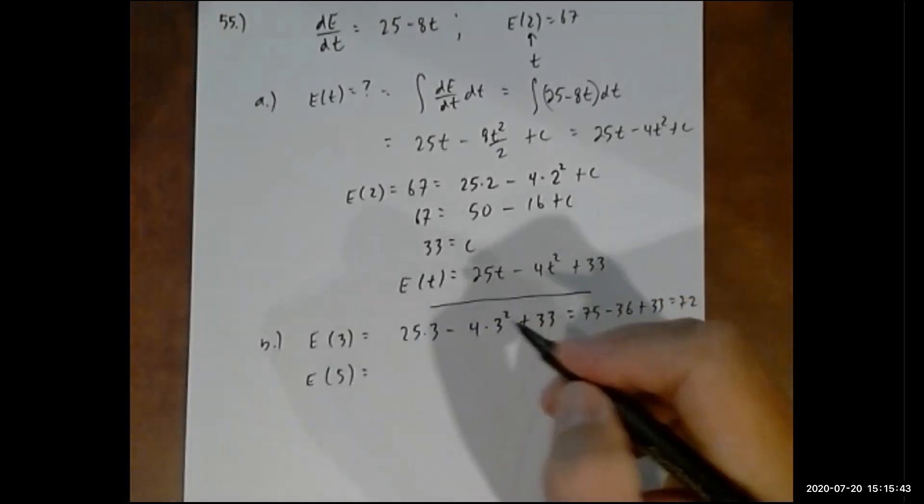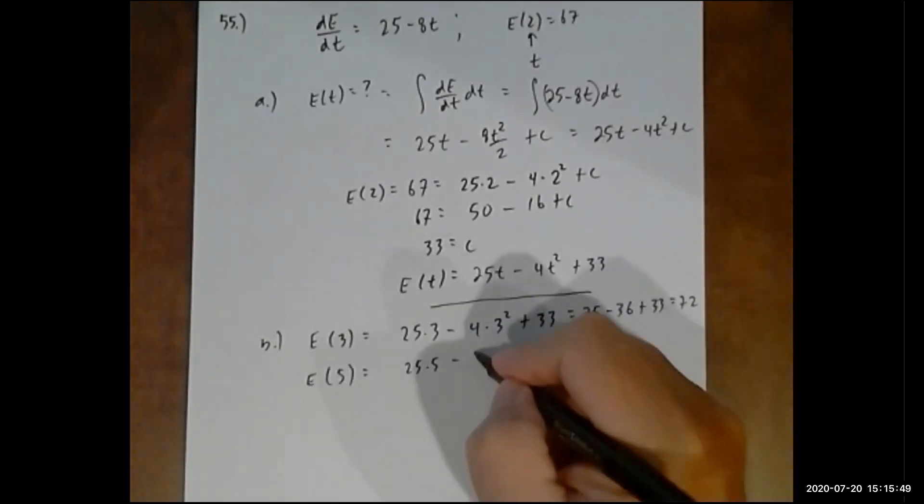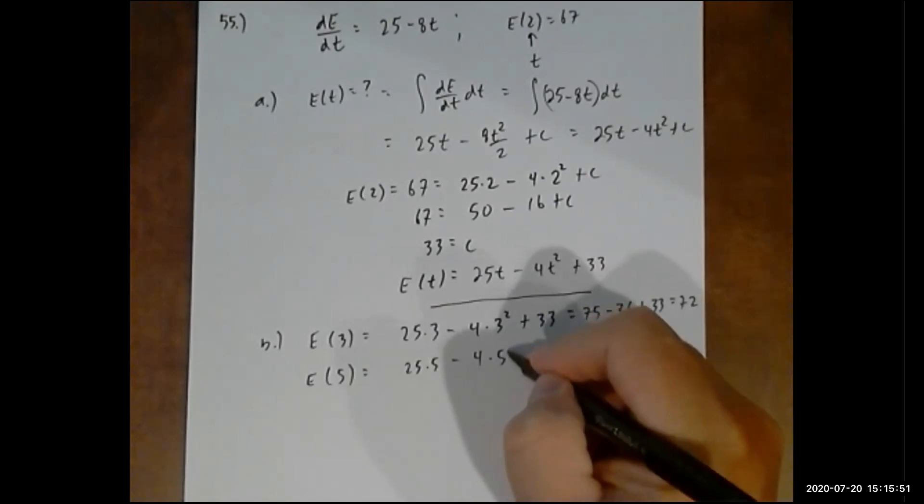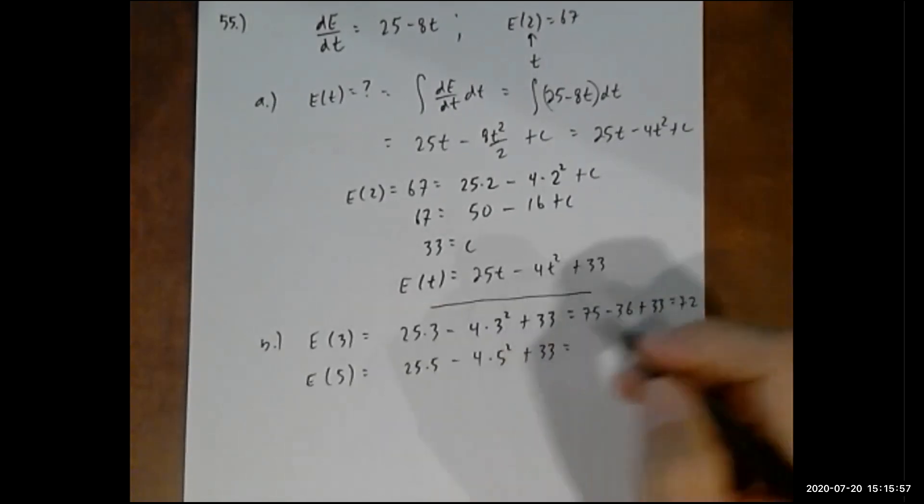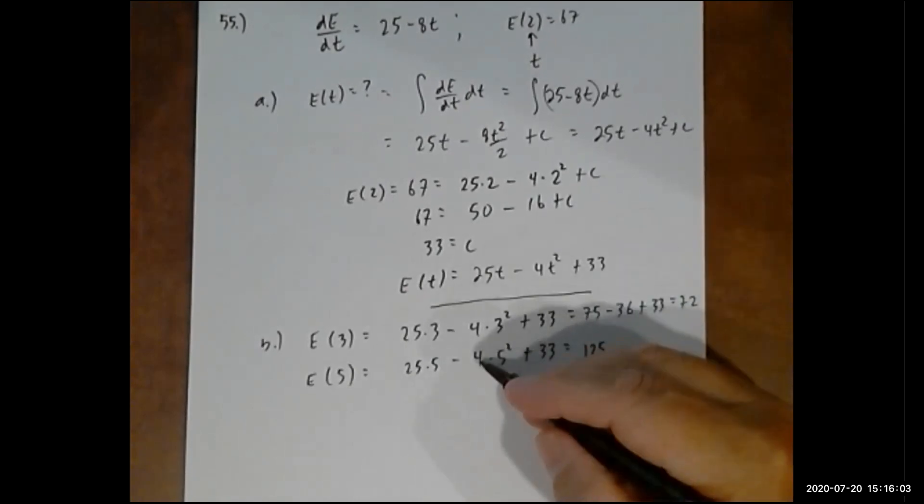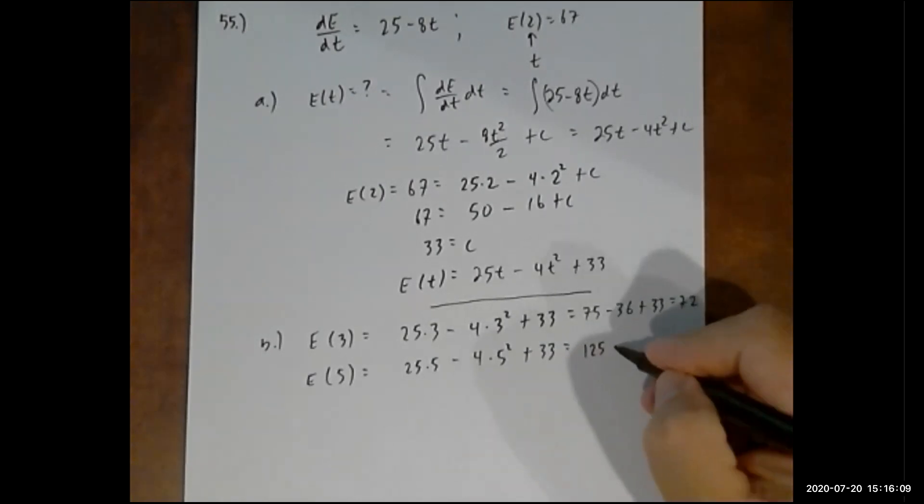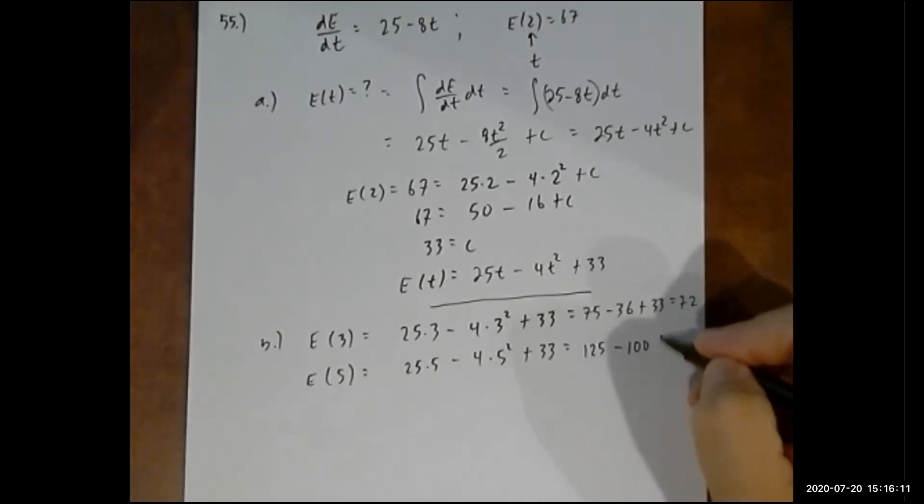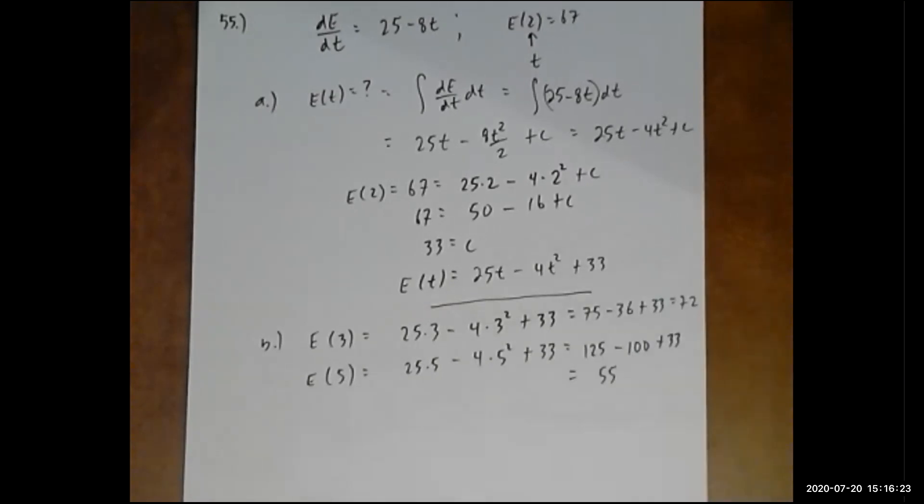After five hours: 25 times 5 minus 4 times 5 squared plus 33. 25 times 5 is 125, 25 times 4 is 100, 25 plus 33. I guess the more the person works, the less efficient they become.